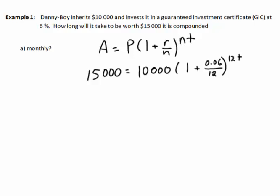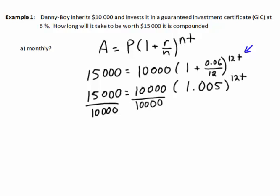Danny Boy wants to figure out how much time this will take. Let's clean this up a little bit here. We can take our 15,000, we have our 10,000, and 1 plus 0.06 divided by 12 is really the same as 1.005 to the 12t. We can divide both sides by 10,000, which makes this easier, so that takes us down to 1.5 equals 1.005 to the 12t.